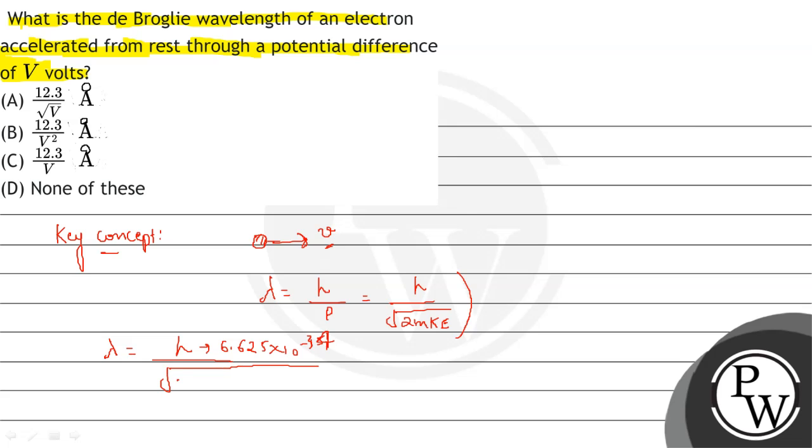And root 2. Mass of electron is 9.1 into 10 to the power minus 34.